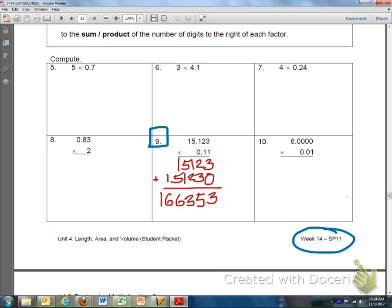We're not quite done yet, though. You'll notice here, this top factor has three numbers past the decimal point. There's 1, 2, and 3. You'll also notice this second factor has two numbers past the decimal point. There's 1, there's 2.